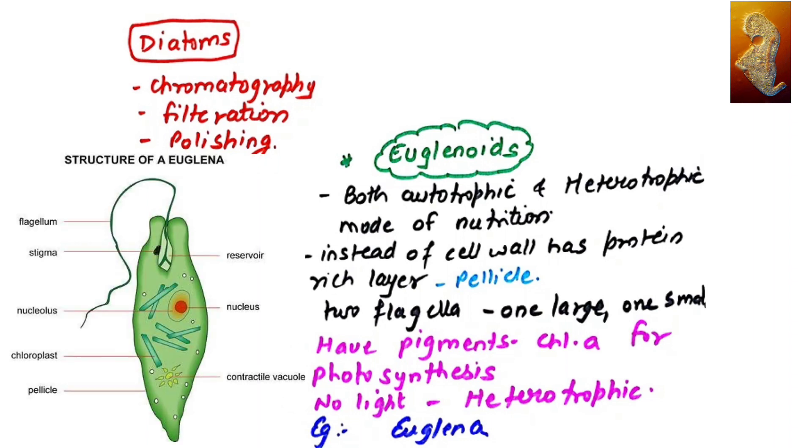When you talk about euglenoids, we need to understand euglena didn't get a place in Whittaker's five kingdom classification. Why? Because euglenoids or euglena showed both autotrophic and heterotrophic modes of nutrition. This simply means that euglena was behaving like a plant in sunlight and like an animal when light is absent. Instead of cell wall, they have a protein-rich layer called pellicle. They have two flagella for locomotion, one large and one small. These euglenas have pigments for photosynthesis like chlorophyll A.